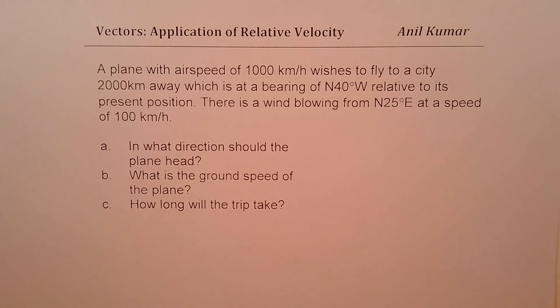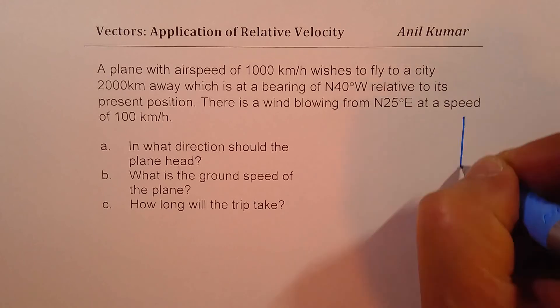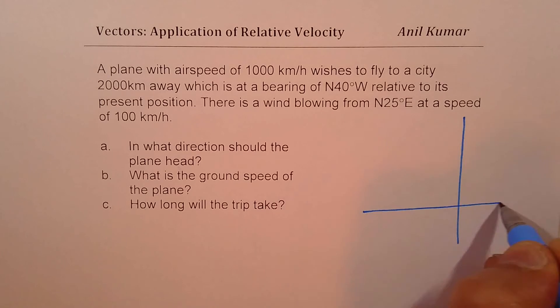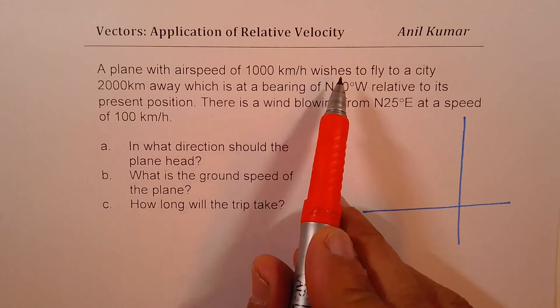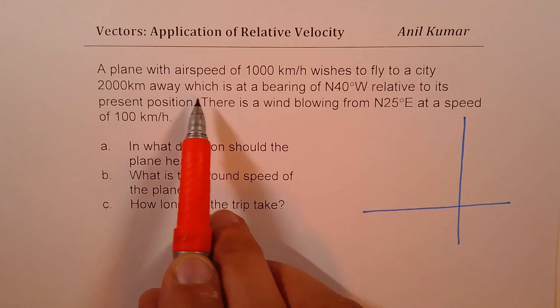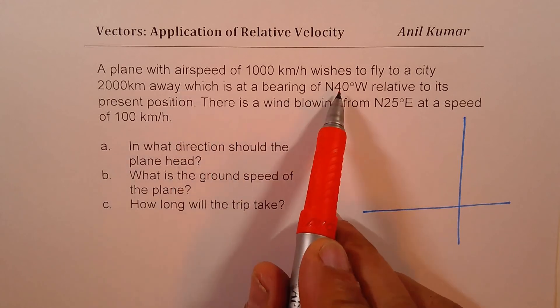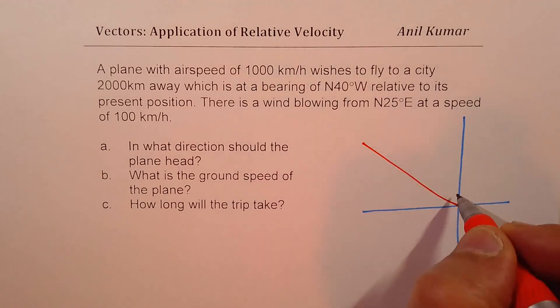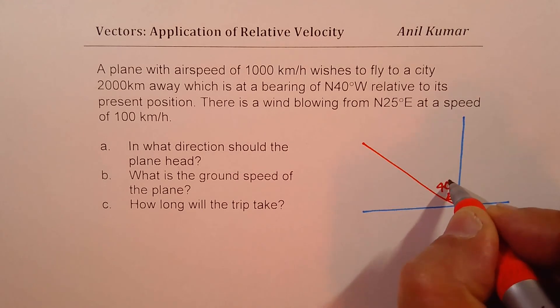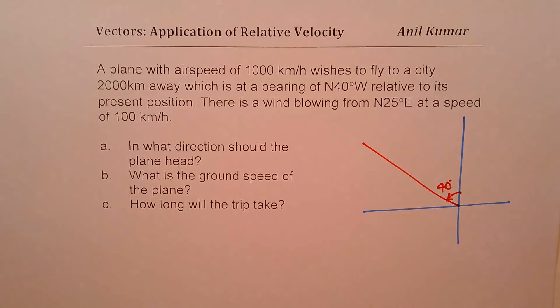So let's try to sketch the scenario. This is the north for us, and everything is happening in this quadrant too. So let me draw this slightly bigger. Now we are given that the airplane, with speed of 1000 km per hour, wishes to fly to a city 2000 km away, which is at a bearing of 40 degrees west of north. Let's say this angle here is 40 degrees west of north. I have purposely taken it slightly bigger, so that we could really work on the triangle being formed.